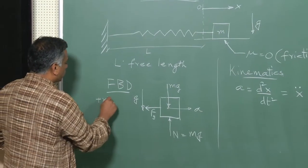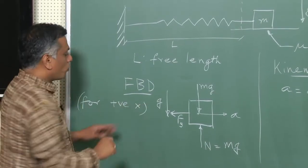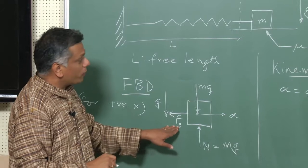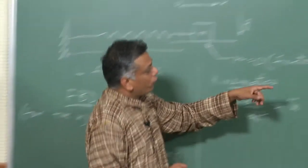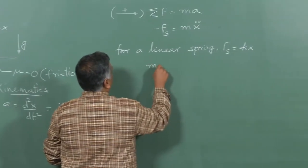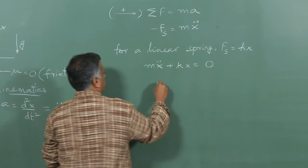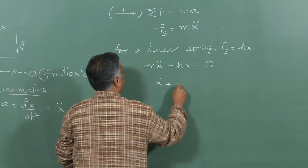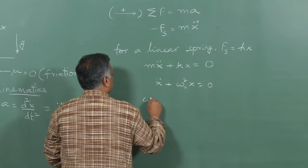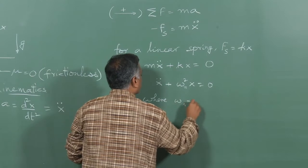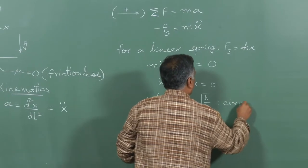For positive x, F sub s is minus kx, and that is how I end up with F_s being kx. Making that substitution, I end up with an equation that I can write in the form x double dot plus ω_n squared times x equals 0, where ω_n is the square root of k over m, also called the circular frequency.